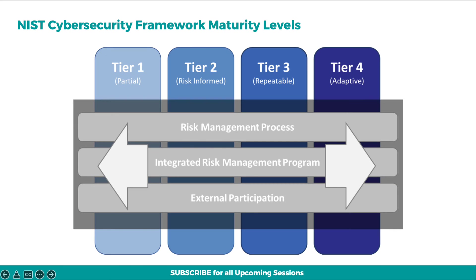Using these five core functions and implementing such security controls, an organization moves up the maturity level scale. Generally, the maturity levels include: Tier 1, which is Partial; Tier 2, which is Risk-Informed; Tier 3, which is Repeatable; and Tier 4, which is Adaptive and continuously improving.